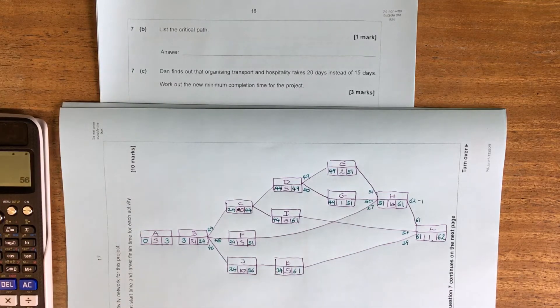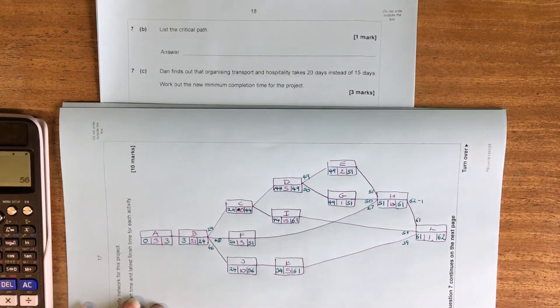We're now asked for our critical path. So these are the critical activities. These are the things that have to start on time so that they can finish on time.